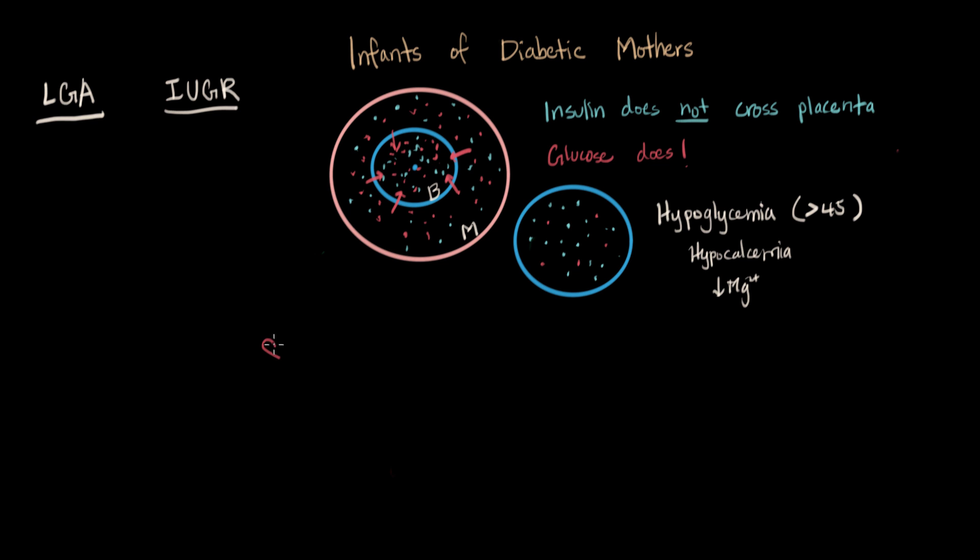For example, cardiac might not be a system you would think of being affected by this, but in the development of the heart, this overproduction, overexposure to glucose can lead to interventricular septal hypertrophy.